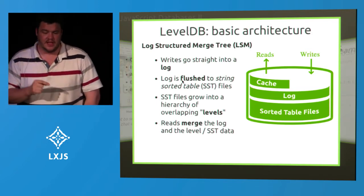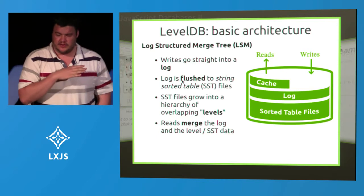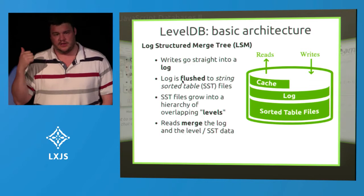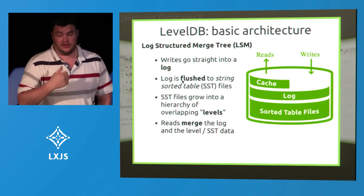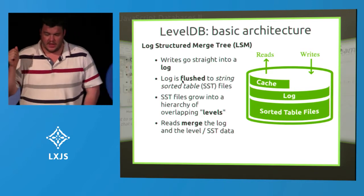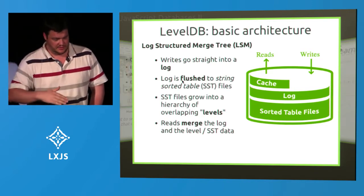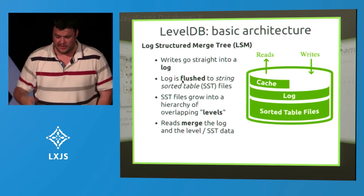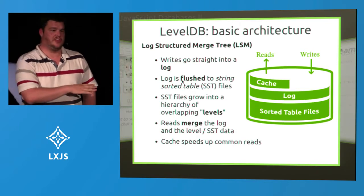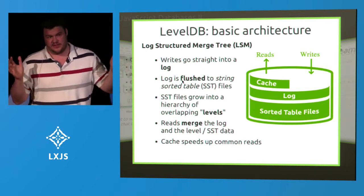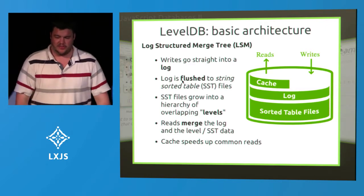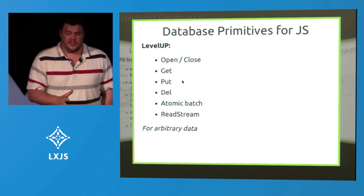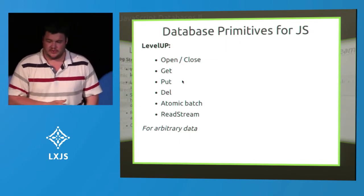When you read from LevelDB, the reads merge the log data and the SST file data. If it's in the log, it comes out straight away — and that could include a delete, so it will come back and say not found. If it's not in the log, it will go searching through these levels looking for the entry and return it whenever it finds it, or say it's not there. There's a cache on top of it to speed up common reads, and that can be as large as you want — you can fit it into your whole memory for lots of fast lookups. This has inspired what we've done in the JavaScript databases world.